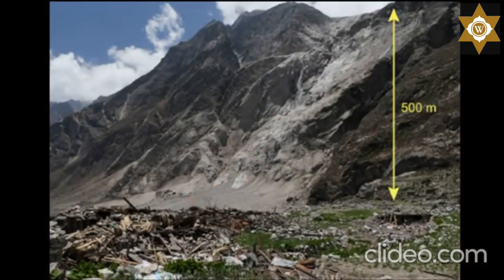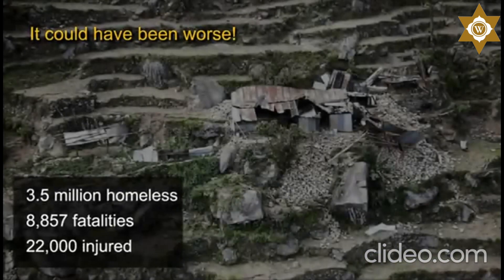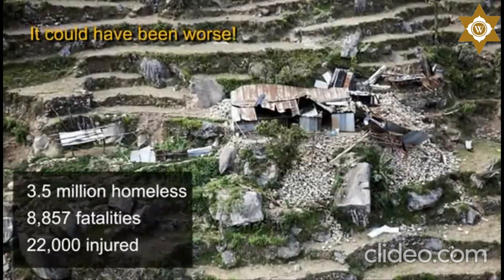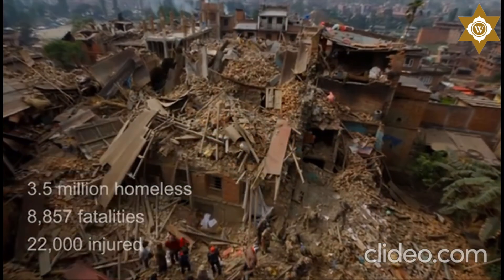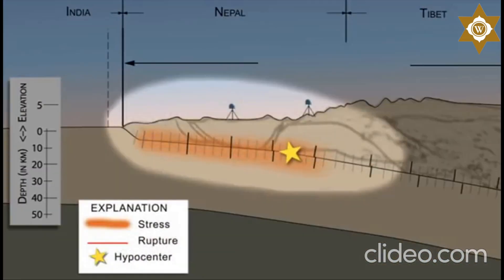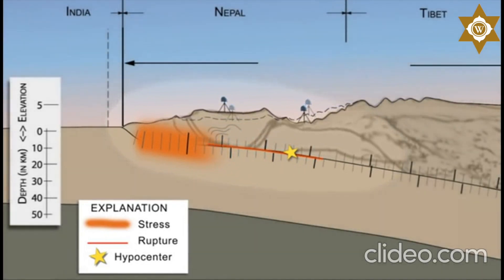It is noteworthy that this magnitude 7.8 earthquake produced fewer landslides, less damage, and a smaller number of injuries and fatalities than seismologists expected. In part, the lesser impact is a result of the slow rupture velocity due to the complex geology in this continental collision zone. More importantly, rupture during the 2015 Nepal megathrust earthquake did not reach the surface, so ground shaking and associated effects were less severe than what would have occurred during a shallower earthquake of similar magnitude.